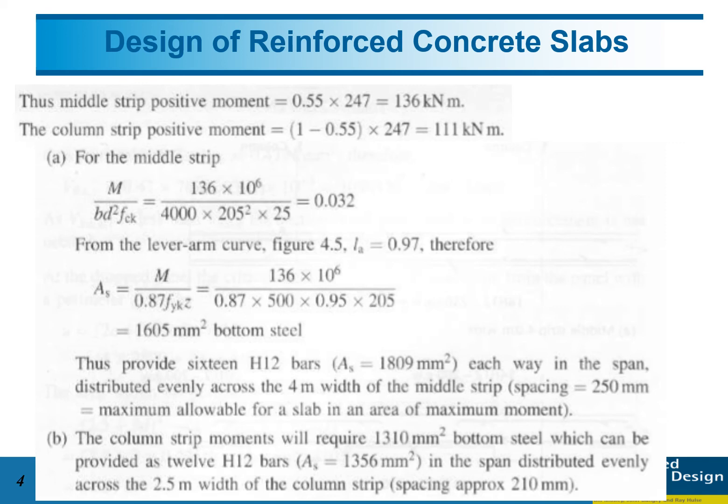We get this value and round up to 16, so we have the actual As provided is 1809 mm². This must be distributed evenly across the 4-meter width of the middle strip, so the spacing is around 250 mm.